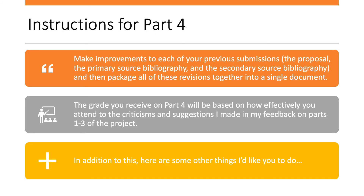Now, to come down off of my soapbox just a little bit, let me talk about the particulars of the final assignment for this research project. For the final part of the project, your goal is to make improvements to each of your previous submissions — that is, the proposal, the primary source bibliography, and the secondary source bibliography — and then to package all of these revisions together into a single document that will be delivered for review. By revisions, I mean making improvements, making corrections, and strengthening the document.